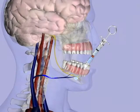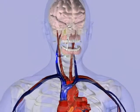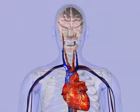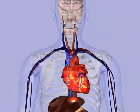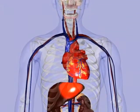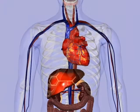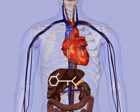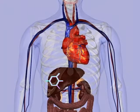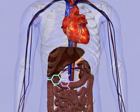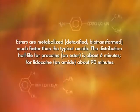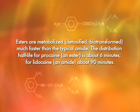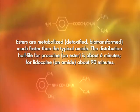The amide local anesthetics are absorbed into the cardiovascular system, but nothing happens here. They travel throughout the venous system, through the heart, and into the arterial circulation. It is only when the amide local anesthetic enters into the liver that it is biologically transformed into an inactive component.